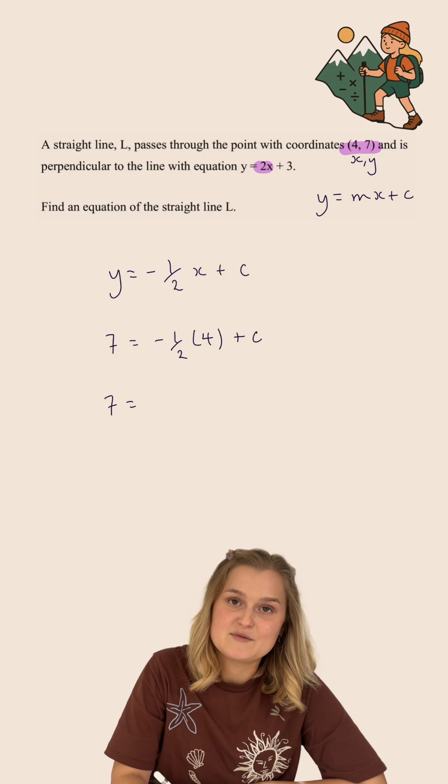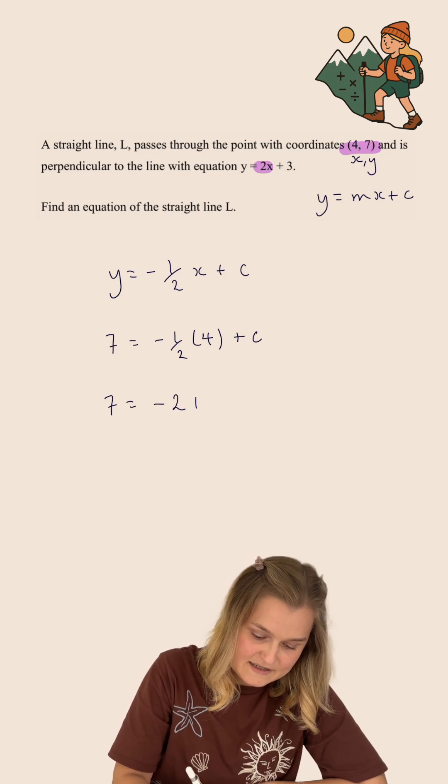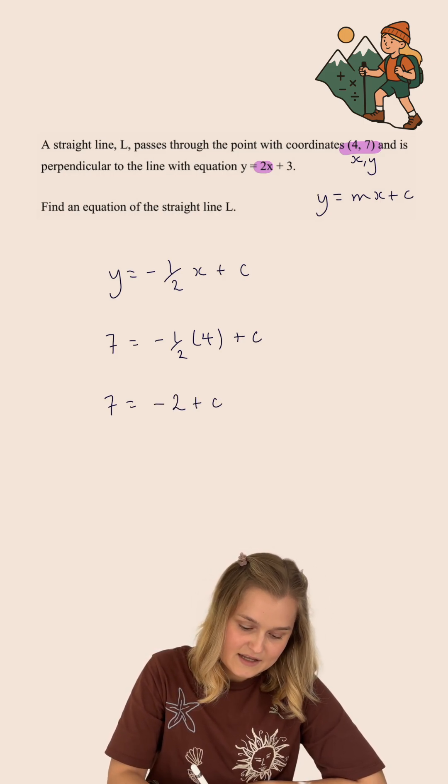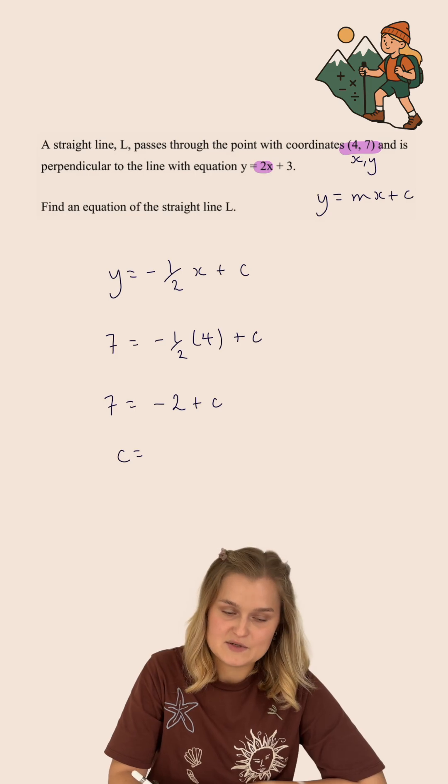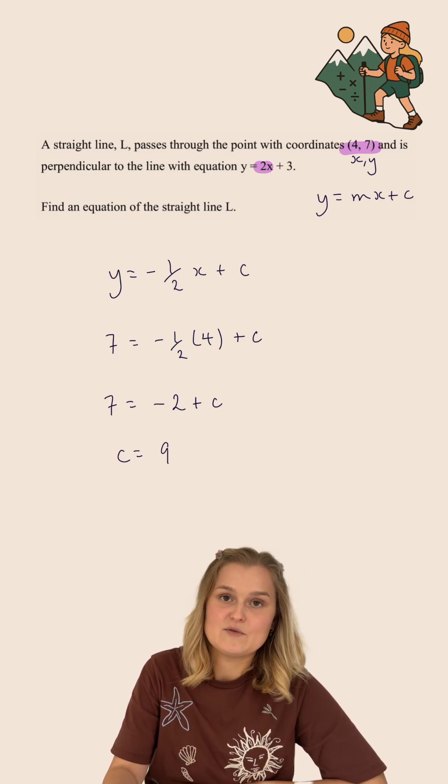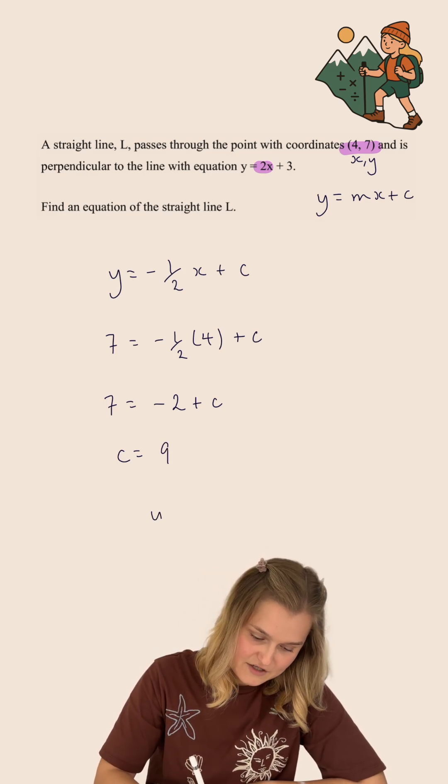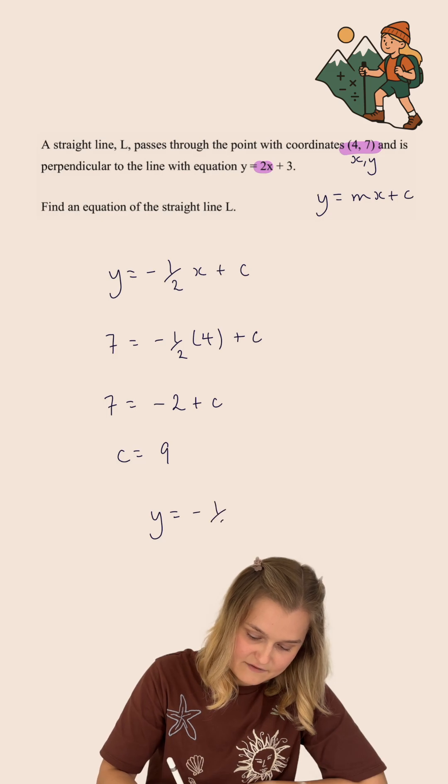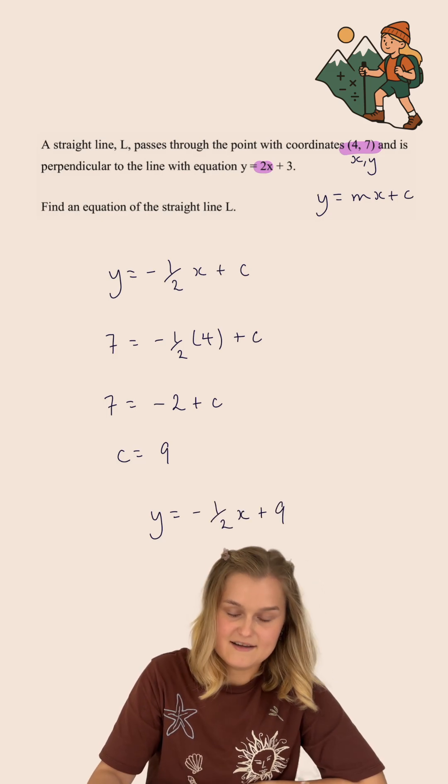Negative 1 half multiplied by 4 is equal to negative 2. And then to work out c, I'm going to add 2 to both sides and I get c equals 9. So my final equation is y equals negative 1 half x plus 9.